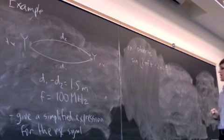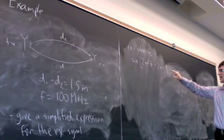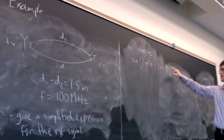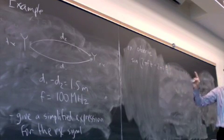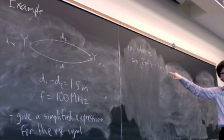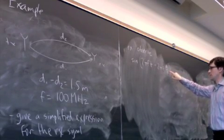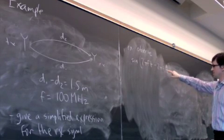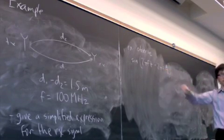So remember how I calculated that. The number of cycles from the transmitter to the receiver is d1 divided by the wavelength lambda. But the wavelength lambda is equal to c divided by f. So that's just substituting back in there.